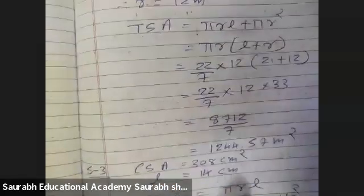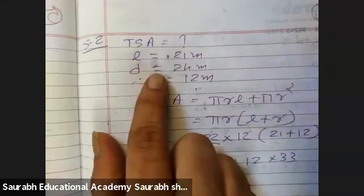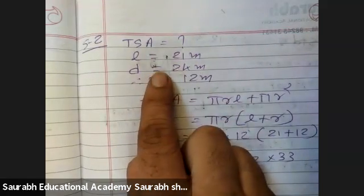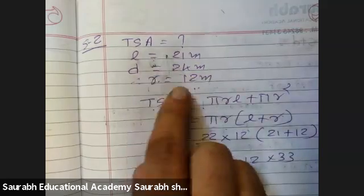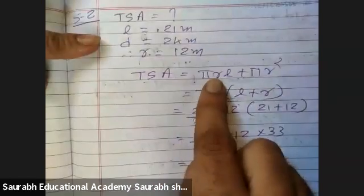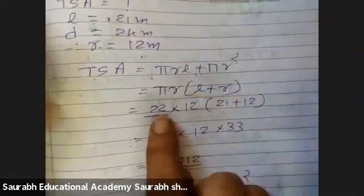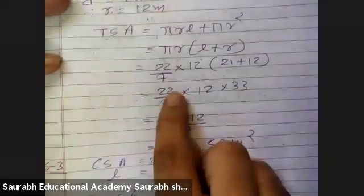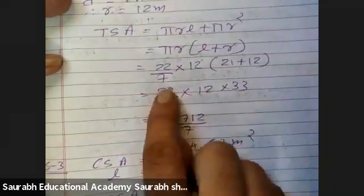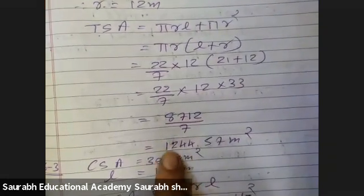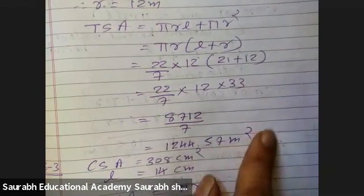Question number two: Find the total surface area if slant height L is 21 meter and diameter of its base is 24 meter. Diameter 24, therefore radius equals 12 meter. Total surface area equals π R L plus π R squared, which is π R into bracket L plus R. That is 22 by 7 into 12 into bracket 21 plus 12, giving 22 into 12 into 33 divided by 7, which equals 1244.57 meter square.